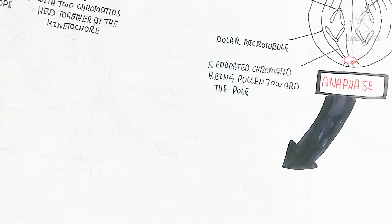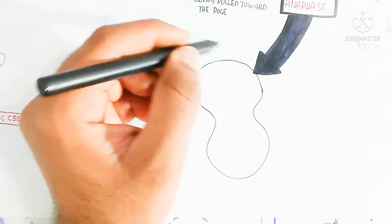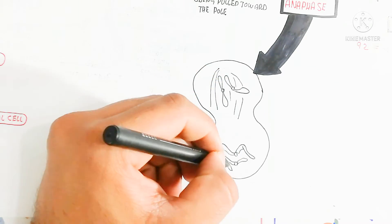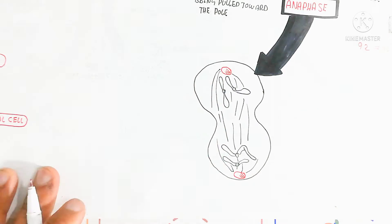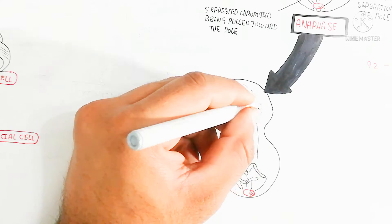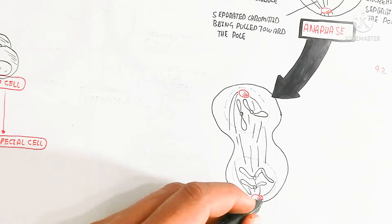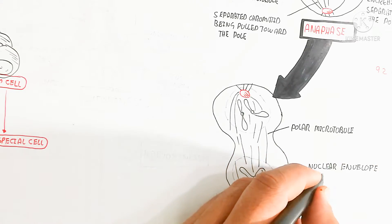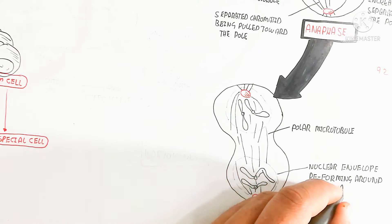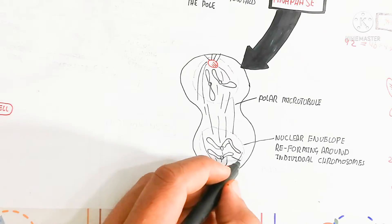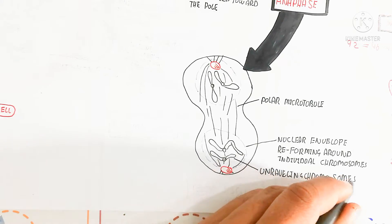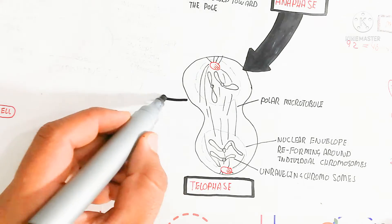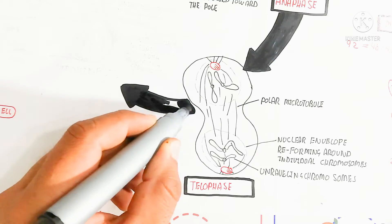After anaphase, telophase occurs. In telophase, the chromosomes move completely toward the poles, unraveling the condensed chromosome structure. The nuclear envelope begins forming around the individual chromosomes at each pole. This is known as karyokinesis — 'karyon' meaning nucleus — because the nuclear envelope is developing. The polar microtubules remain at the center of the dividing cell. After karyokinesis is complete, cytokinesis begins.